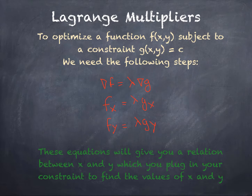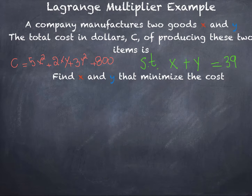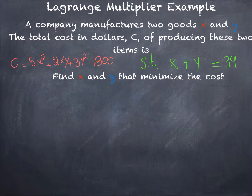These equations will give you a relation between x and y, which you then plug into the constraint to find the values of x and y that optimize the function. Here is a specific example of how Lagrange multipliers can be used in economics: a company manufactures two goods, x and y, given a cost function c equals 5x² plus 2xy plus 3y² plus 800.